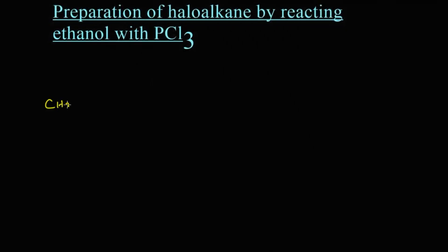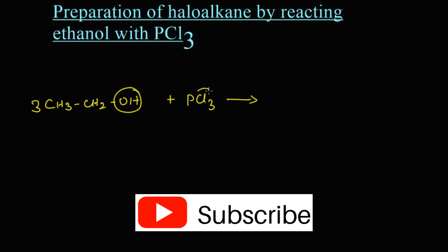The reaction: CH3-CH2-OH, that is ethyl alcohol or ethanol, reacts with phosphorus trichloride PCl3. Three molecules of ethanol will take part in this reaction. This three OH groups from three molecules of ethanol will be replaced by this three chlorine.